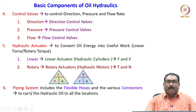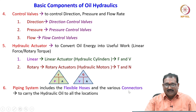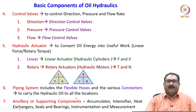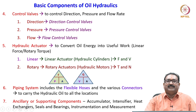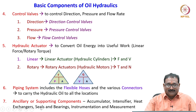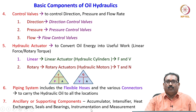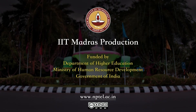The fifth important component is the piping system, which includes flexible hoses and various connectors to carry hydraulic oil to all locations in the circuit. Last but not least, the hydraulic system consists of ancillary devices or supporting components — basically the accumulator, intensifier, heat exchangers, seals and bearings, and instrumentation and measurement systems to monitor process parameters like pressure and flow.